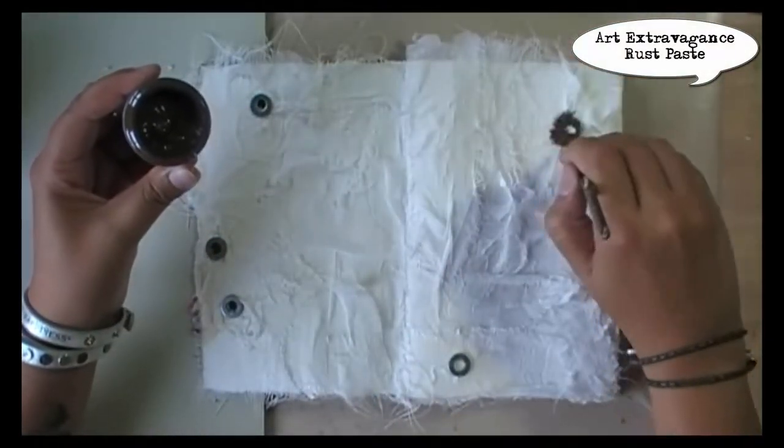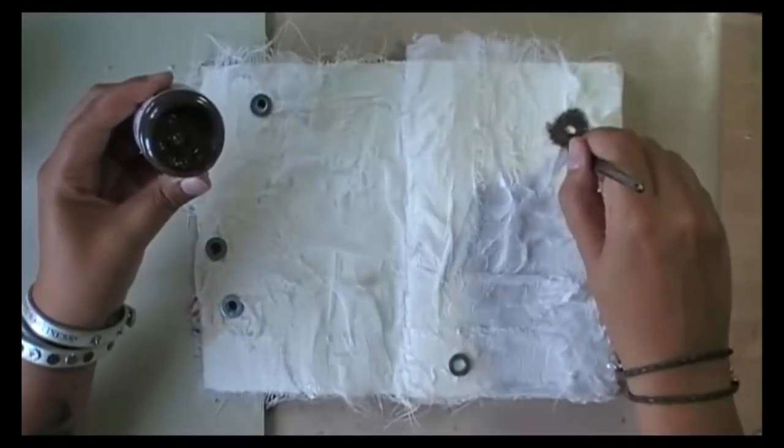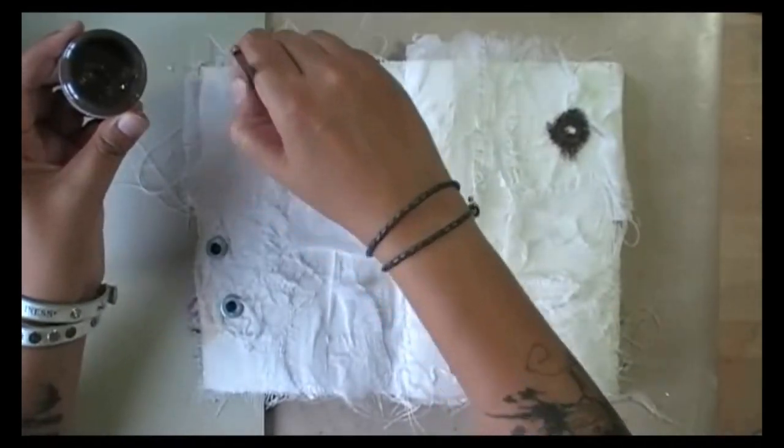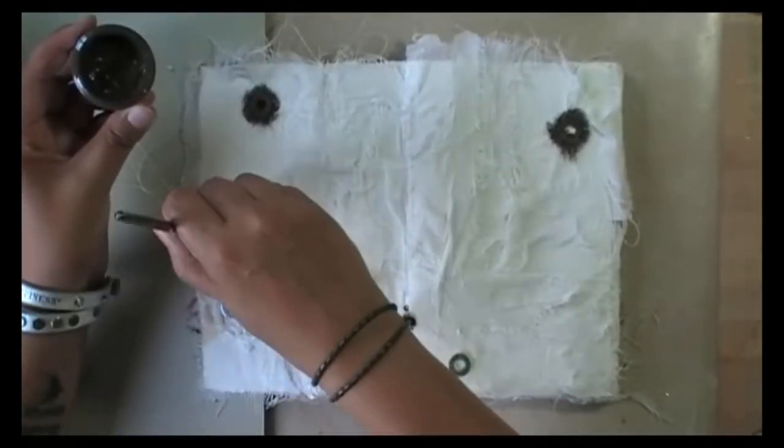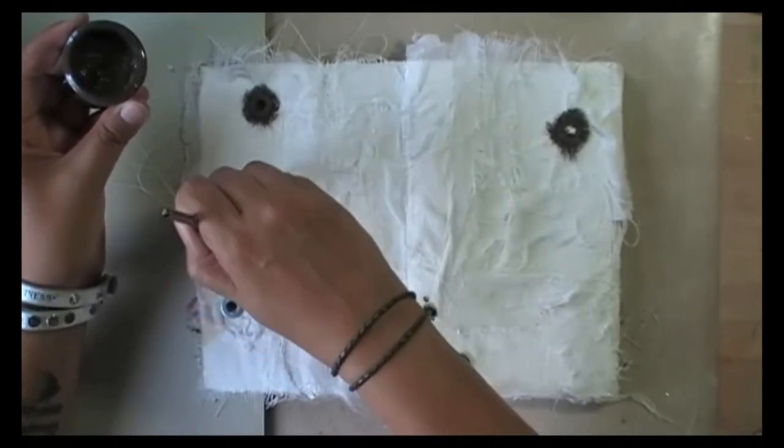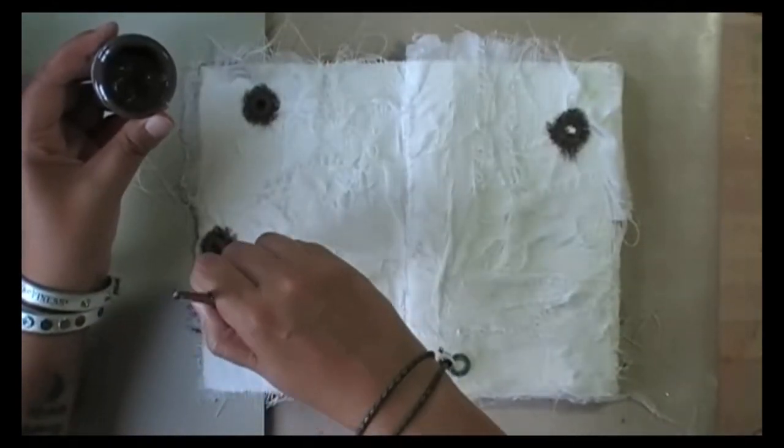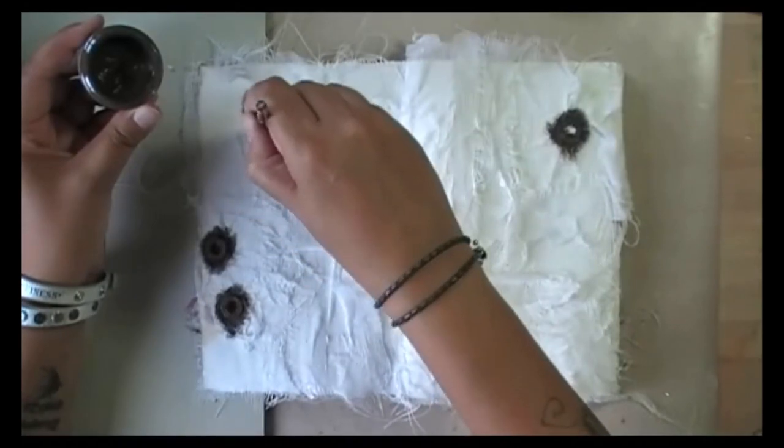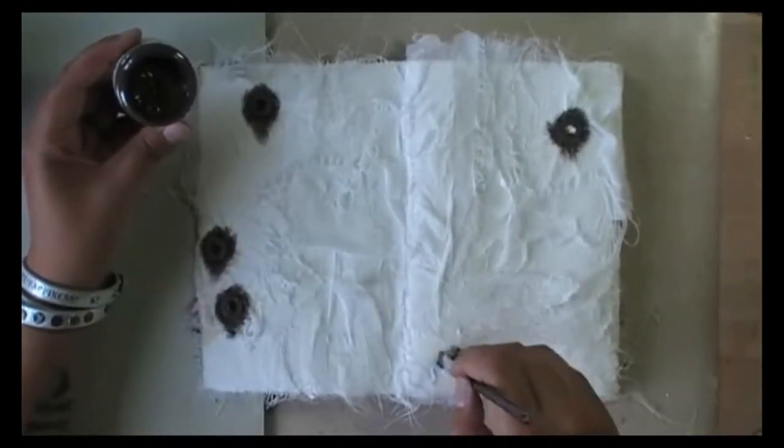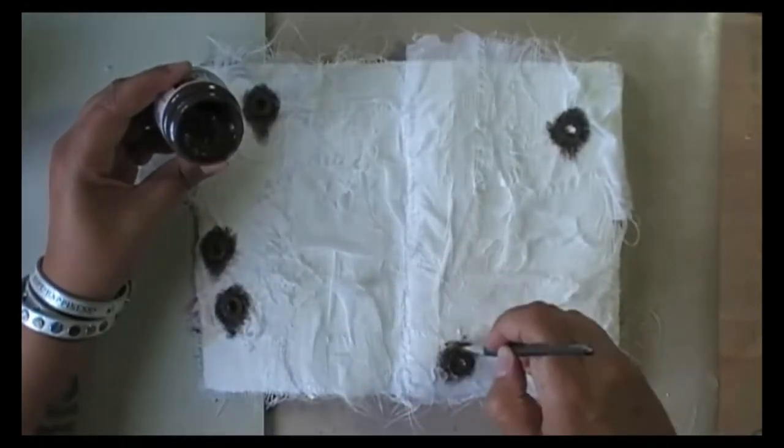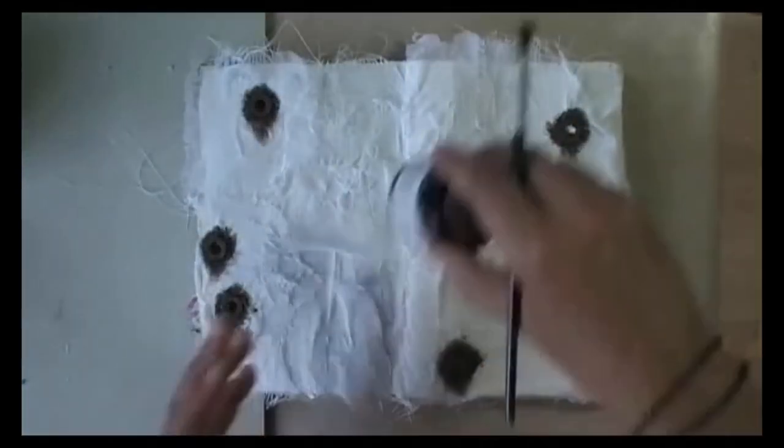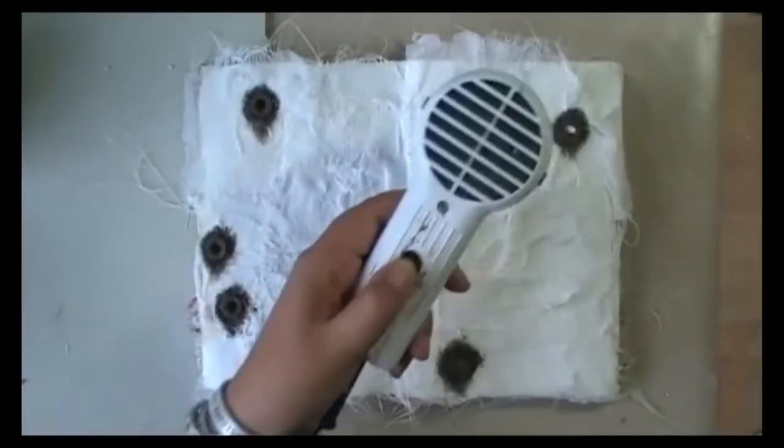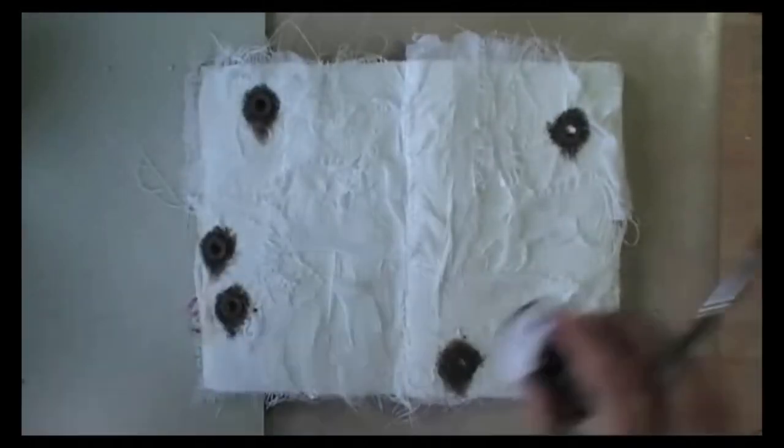Now these need rusting, of course. Of course they do. So I'm using Finn's rust paste. I'm using the darkest color first. And when this will be dry, I will add the second color, which is the red rust. I don't really like the yellow ones, so I don't really use that one. But you'll see that I will add something else to make it look even more like rust.